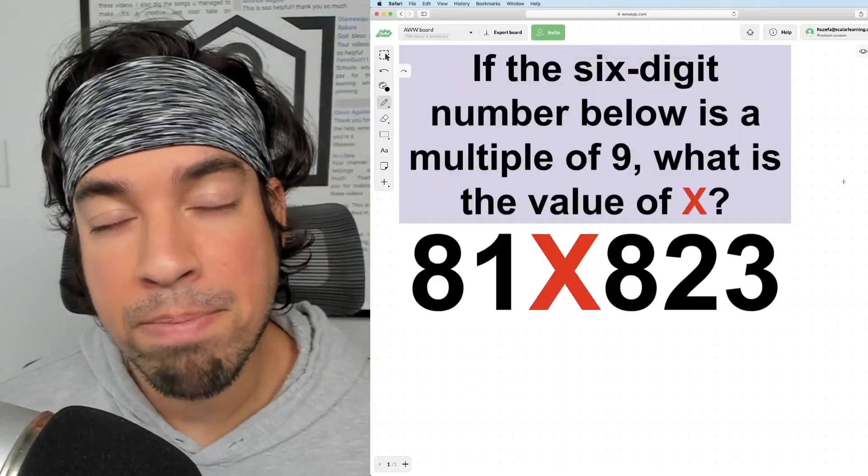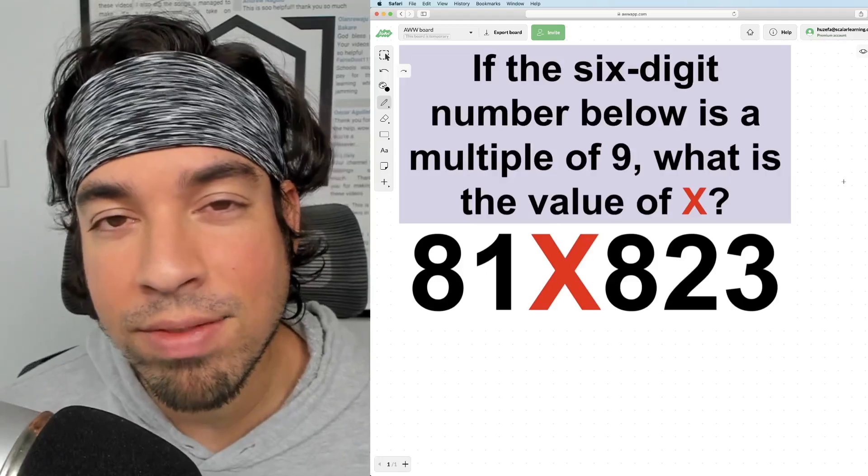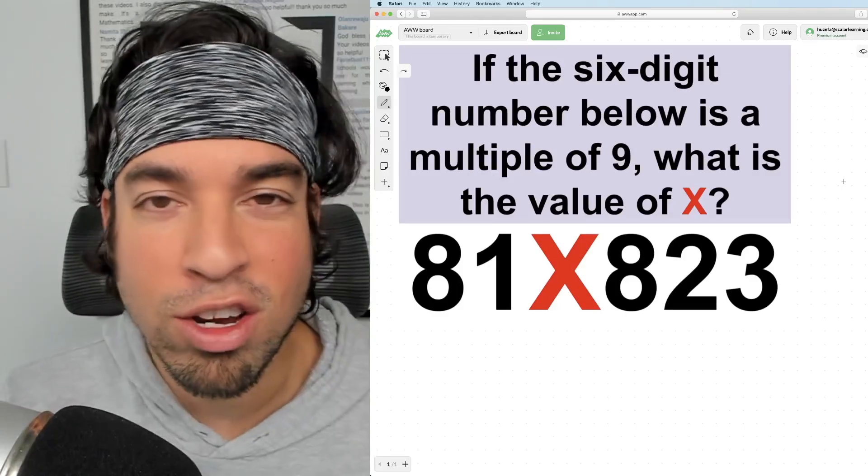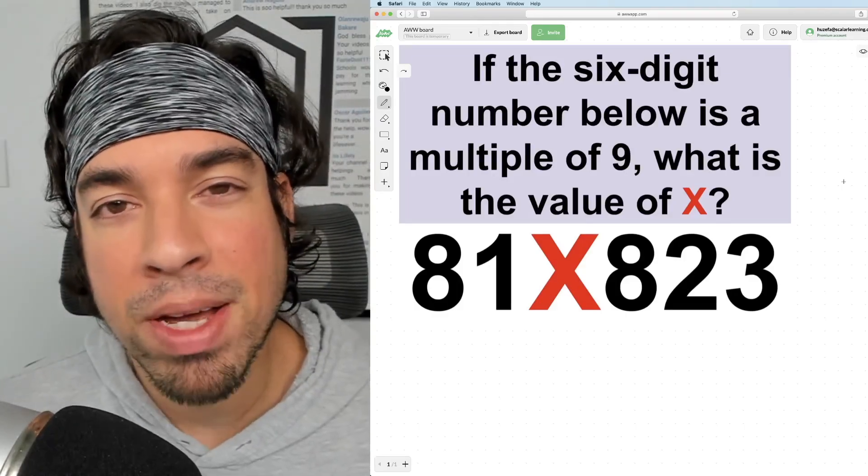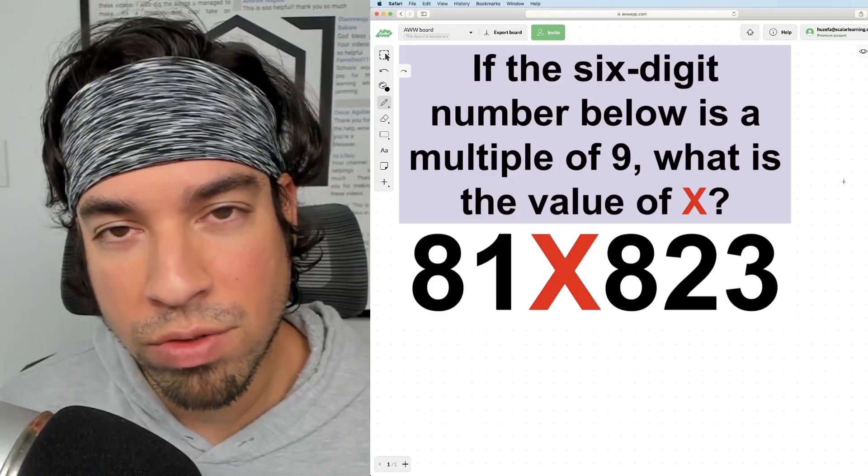All right, so with a puzzle like this, of course we know that there's only 10 options for X, right? Any of the digits from zero through nine. You could try them out and then divide by nine, try a new one, divide by nine. But a better approach is to leverage the fact that we have divisibility rules for nine.